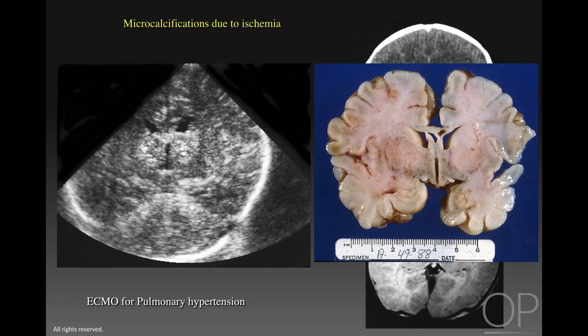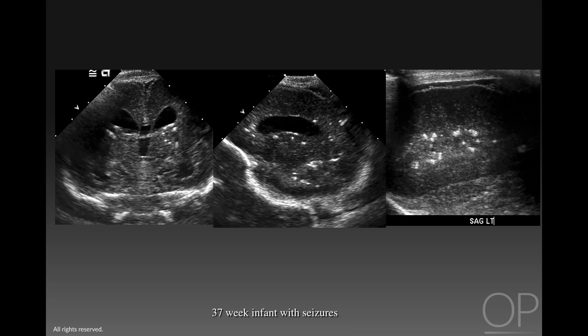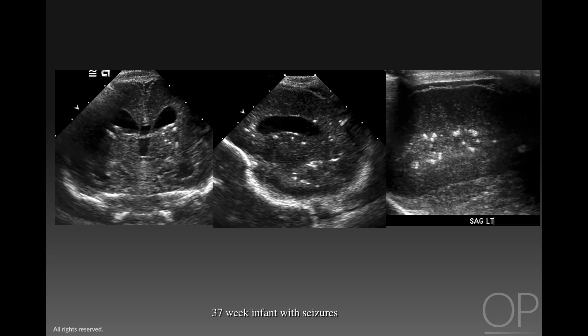The other pattern of calcifications is seen in this child who is 37 weeks and presents with seizures. In addition to multiple coarse calcifications in the periventricular white matter, this infant has very limited sulcation despite being near term. This child had been infected with cytomegalovirus during pregnancy, and these focal calcifications represent secondary granuloma formation from the CMV infection.